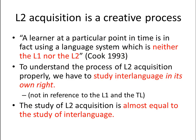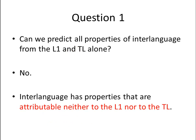Coming back to an earlier point: second language acquisition is a creative process. According to researchers, a learner at a particular point in time is using a language system which is neither the L1 nor the L2. To understand second language acquisition properly, we have to study interlanguage in its own right — not only in reference to the L1 and the target language. The study of second language acquisition is almost equal to the study of interlanguage. So the answer to our first question is: no, we cannot predict all properties of interlanguage from the L1 and target language alone.